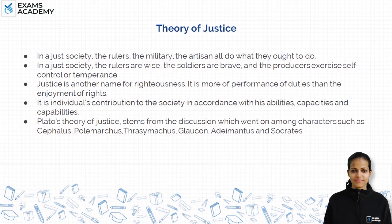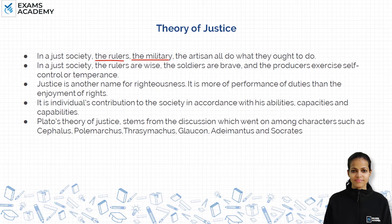Before we start the theory of justice, let me give you a brief background. Plato has a theory of soul on which he bases three major classes in society: the rulers — kings and monarchs — the military people, also called guardians or soldiers, and the producers — artisans, traders, farmers, and others who are the main drivers of economic activity.